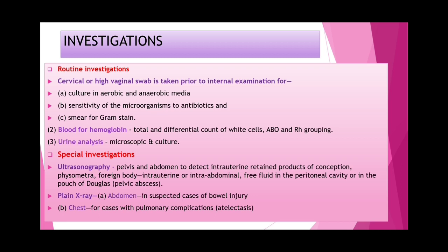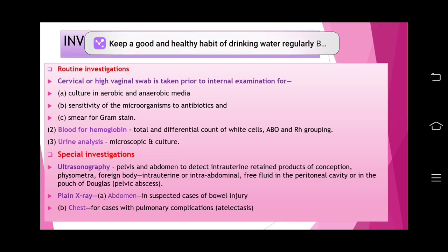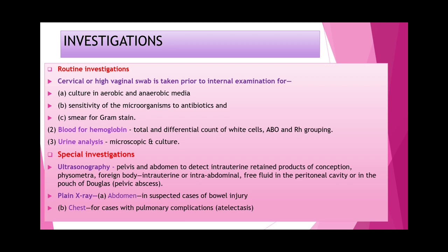Investigations: Routine — cervical and vaginal swab for culture of aerobic and anaerobic organisms, sensitivity testing, Gram stain smear; blood for TLC, DLC, hemoglobin, ABO and Rh grouping; urine analysis. Special — ultrasonography to identify retained products of conception, foreign body, intrauterine or intra-abdominal free fluid in peritoneal cavity or pouch of Douglas. Plain X-ray abdomen for suspected bowel injury; chest X-ray for pulmonary complications.